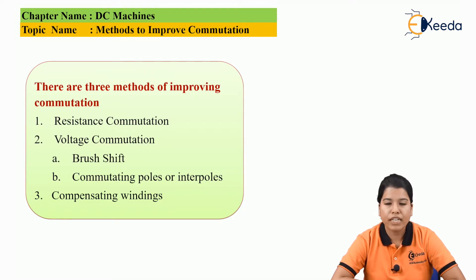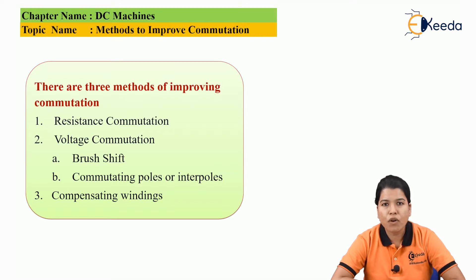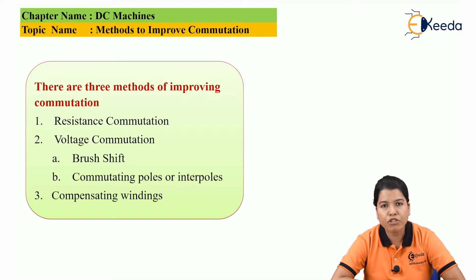Now, in the case of resistance commutation, whatever brushes are used in the DC machine, the resistance of those brushes must be increased. Hence, we have to use high resistance carbon brushes. Due to this, whatever sparking occurs in the process of current reversal is eliminated, and we can improve the method of commutation.